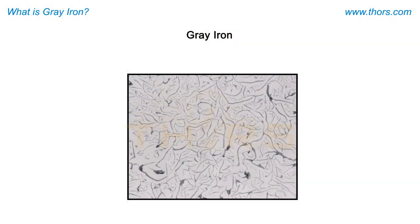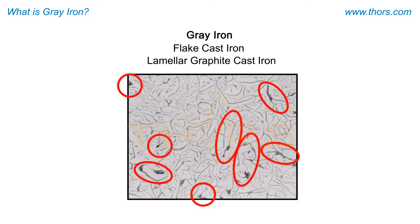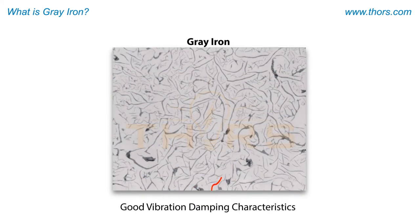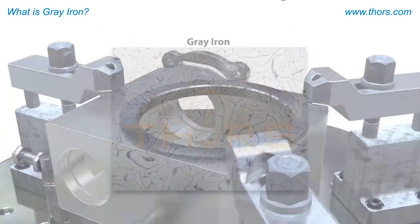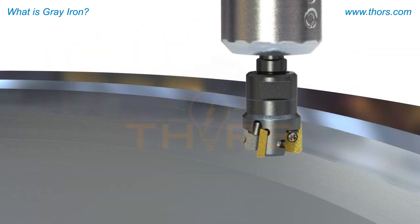Grey iron, also known as flake cast iron or lamellar graphite cast iron, is the most prominent type of cast iron. The long, thin graphite flakes are the most recognizable feature of grey iron. The distinctive features of grey iron are attributed to its microstructure. The graphite flakes impart superior vibration damping capabilities for parts and components cast from grey iron. These graphite flakes also act as chip breakers and lubricants during machining.